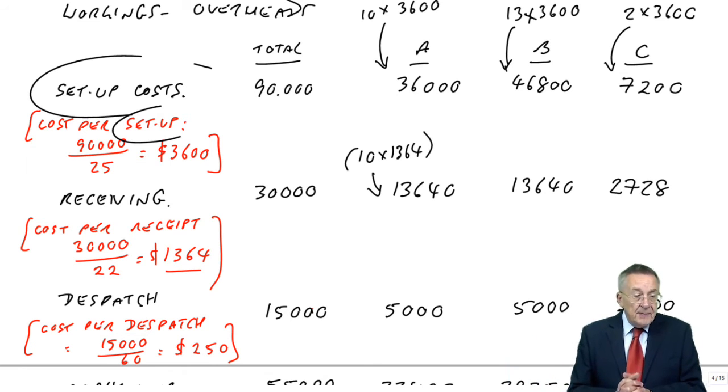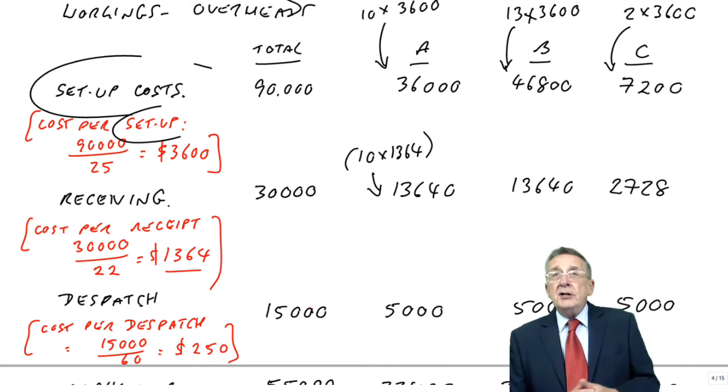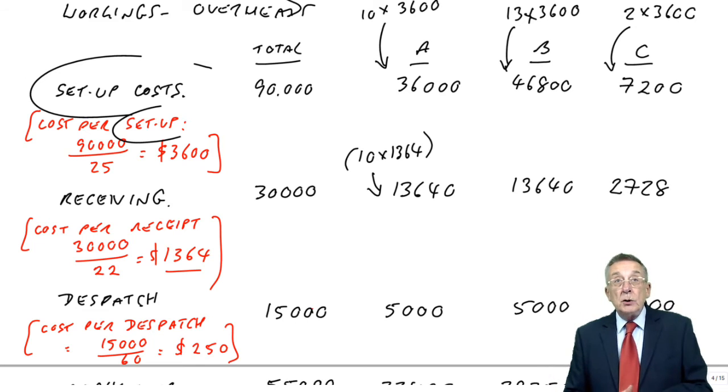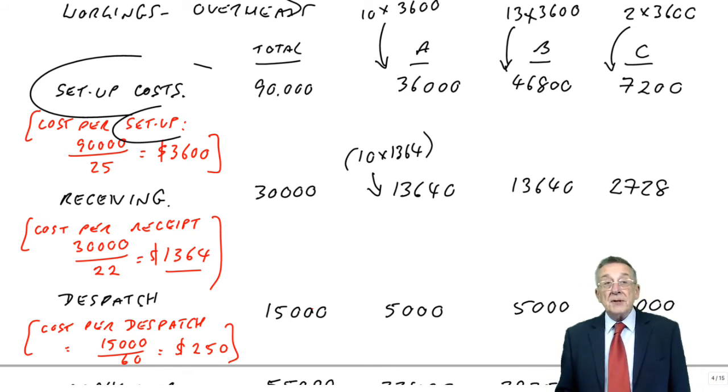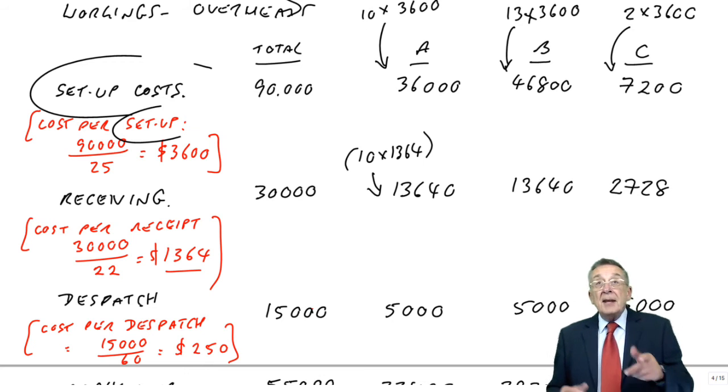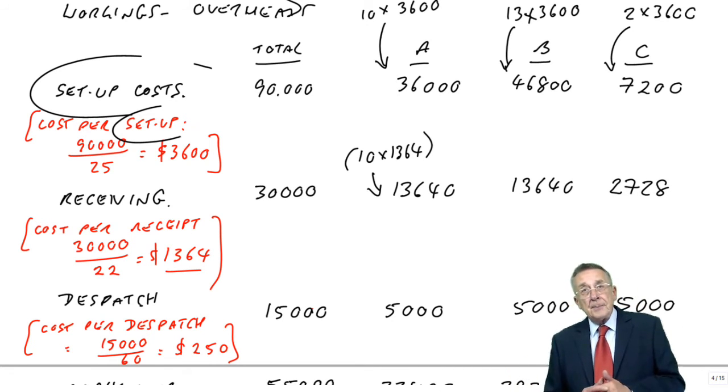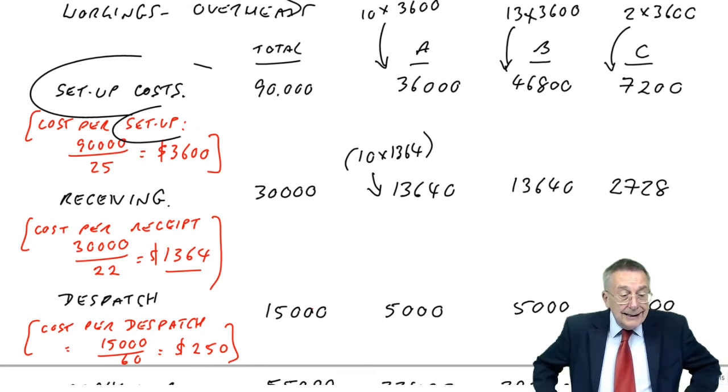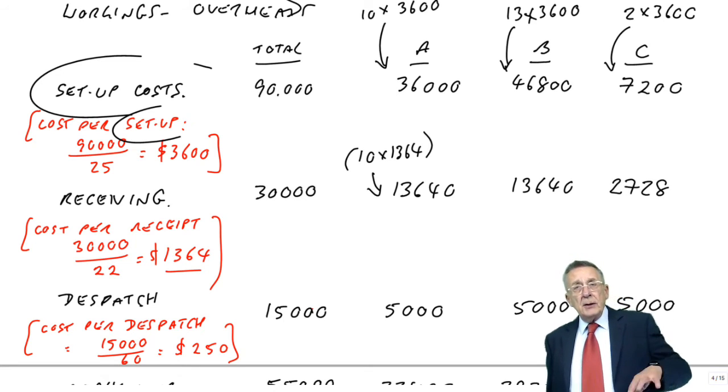Oh, it's because we're making them in batches. So, A, how many are we making each time? We're making 20,000 in total. We're setting up machines 10 times. So, it means we're making them in batches of 2,000 units at a time. What about product C? We're making 2,000, two batches. That means we're only making 1,000 each time.